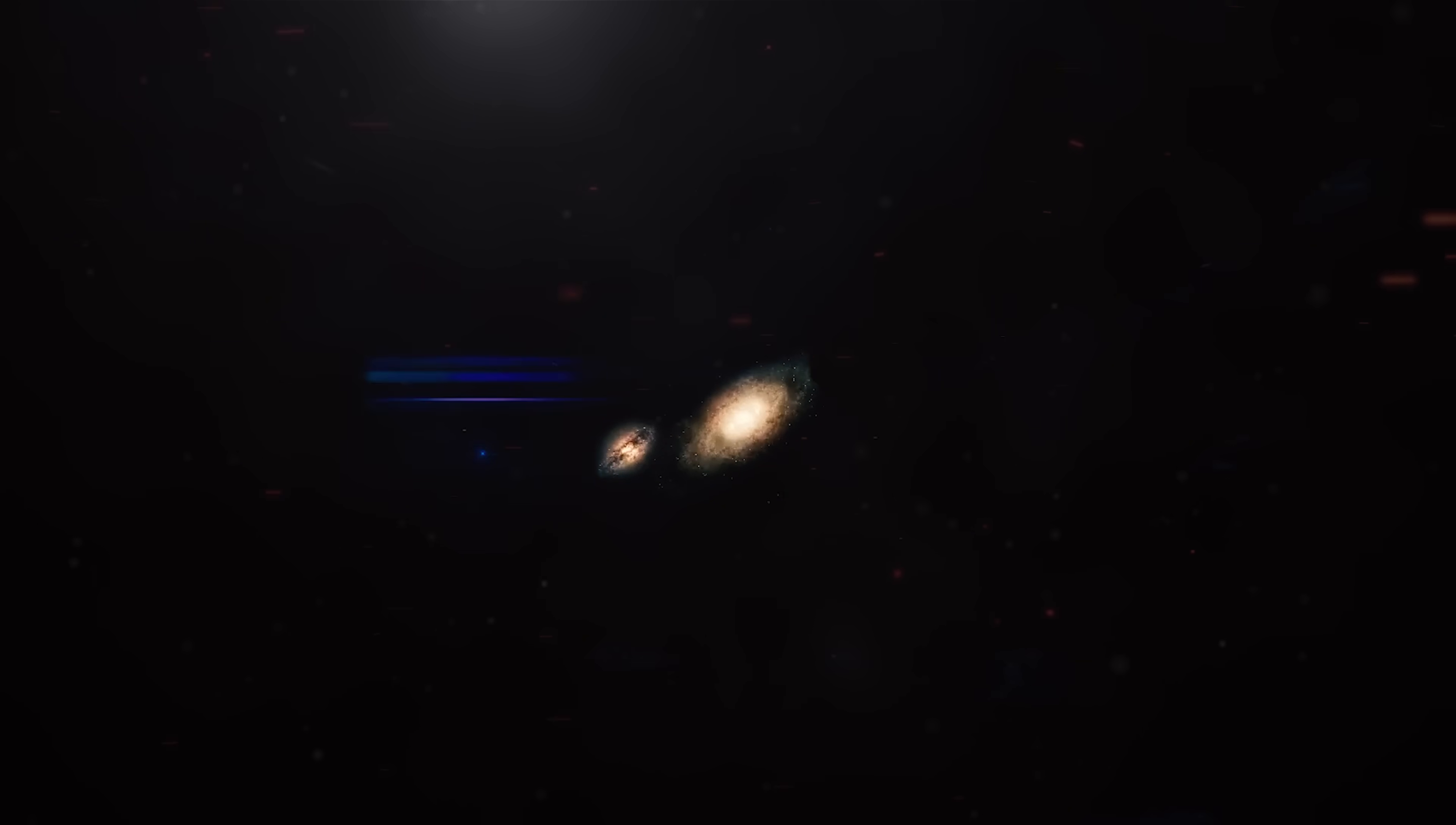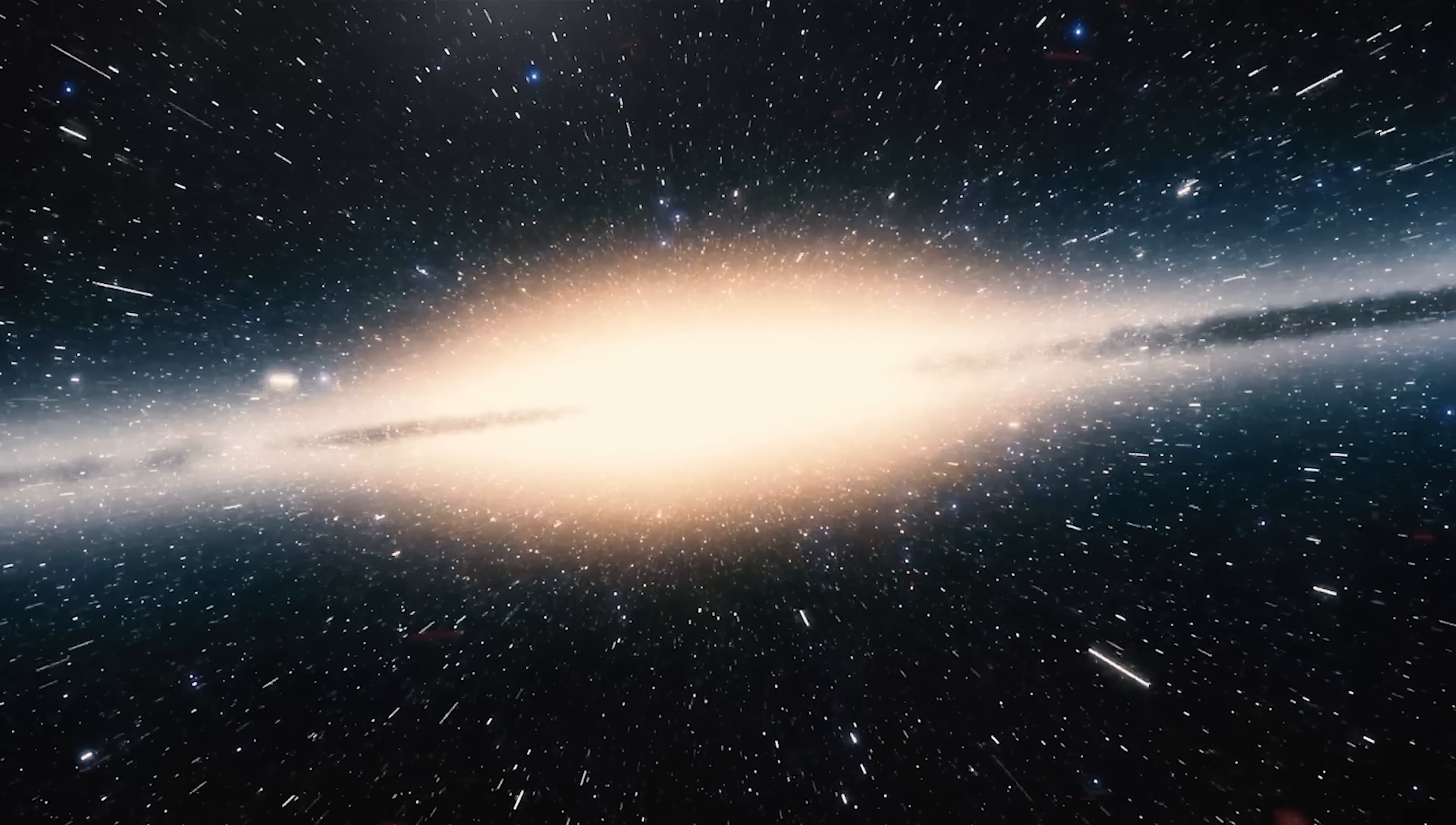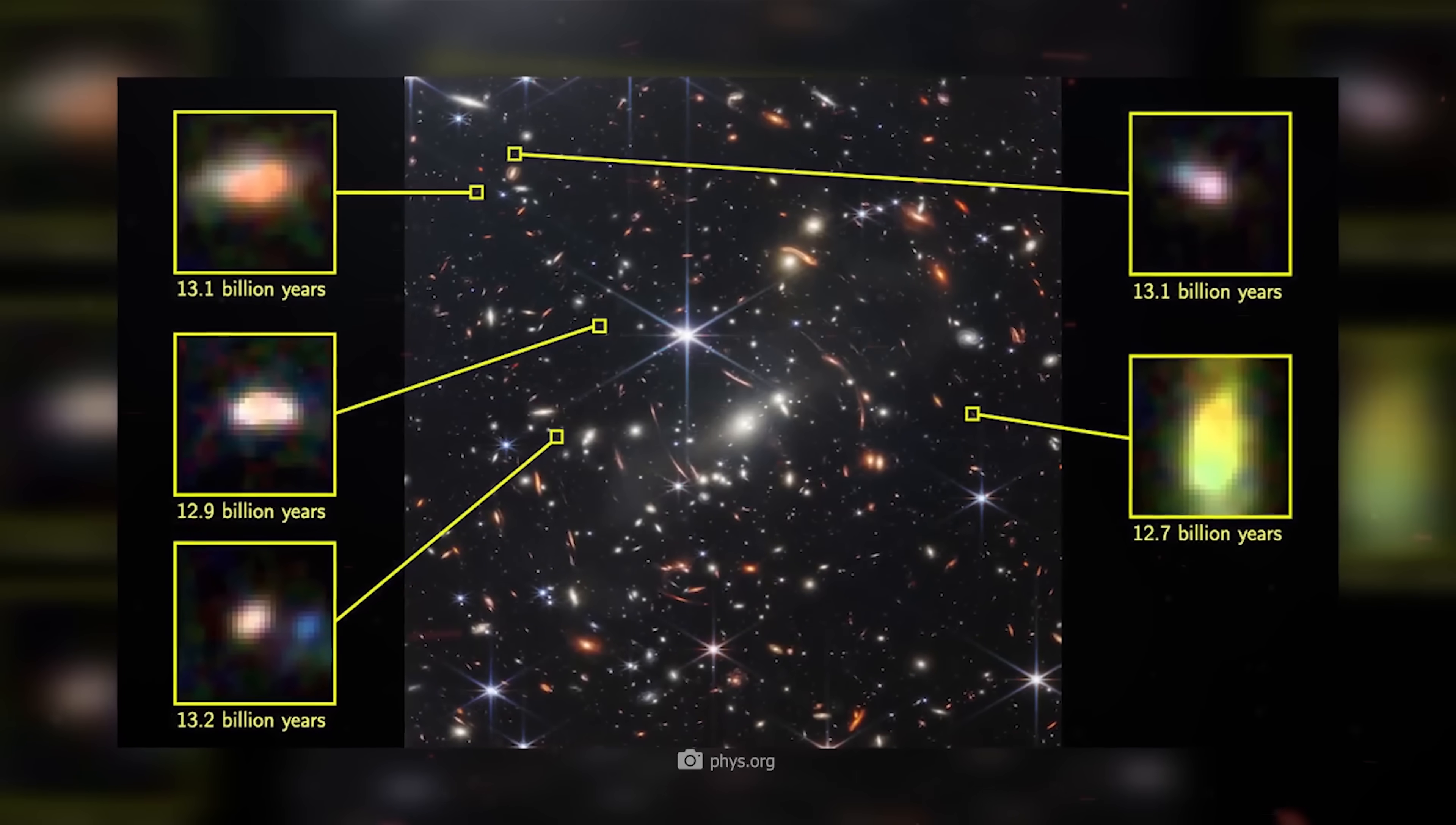Astronomers now assert with confidence that the light emanating from these galaxies has traversed a journey of over 13.4 billion years to reach Earth. The findings indicate that these galaxies were present in the universe when it was a mere 350 million years old.